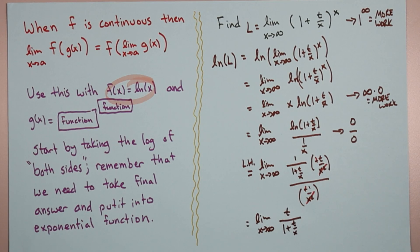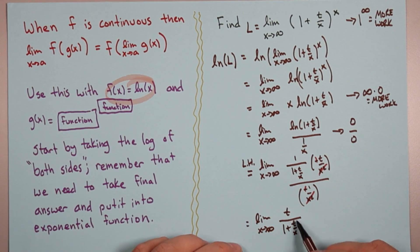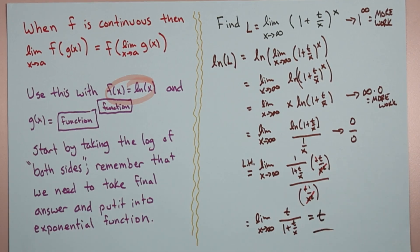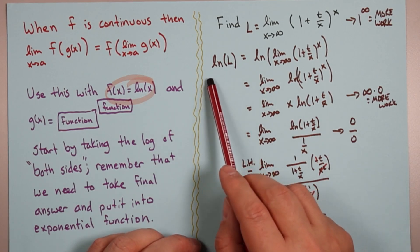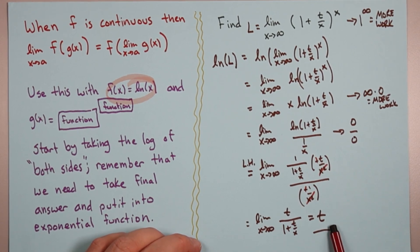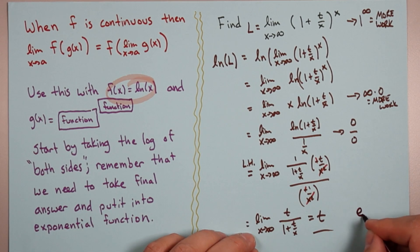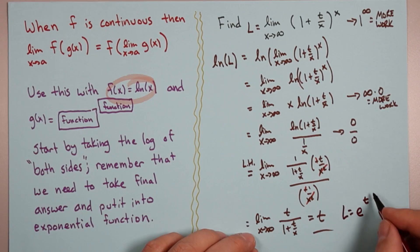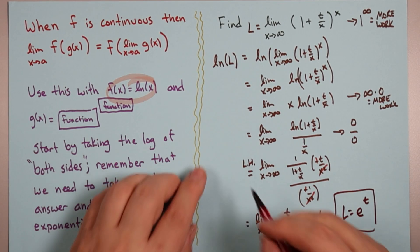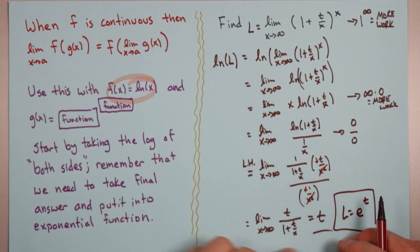That leaves the limit as x goes to infinity of t over (1 + t/x). As x goes to infinity, t/x drives to zero, and this becomes t over 1, which is t. But t is not our final answer — remember, we started by taking a log: log L equals t. So L equals e^t. That's our answer.